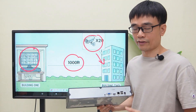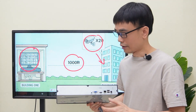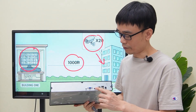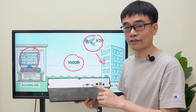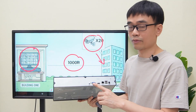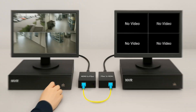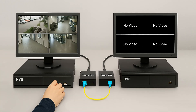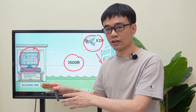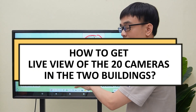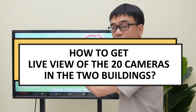But it also creates issues. Since both buildings share the same video source — one comes from the HDMI output, another comes from the VGA output — if someone is operating the network video recorder in the first building, then the owner will lose the live view. So how can we have the live view for these 20 cameras in both buildings?